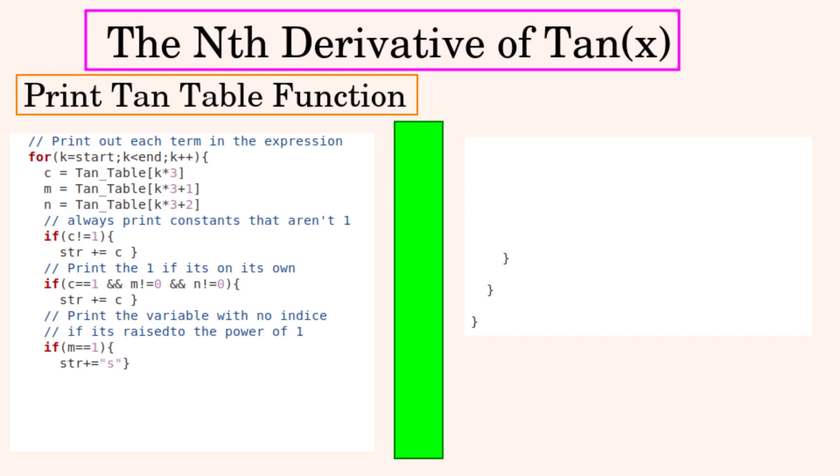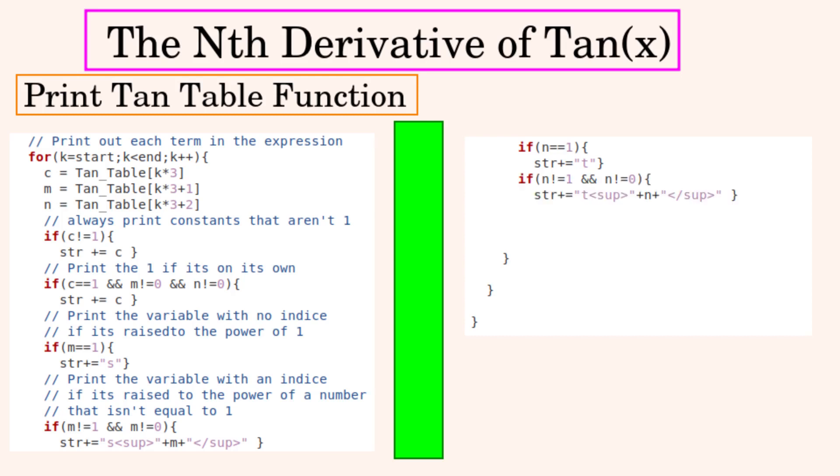If the variable s is raised to the power of one then we'll write it out on its own without any indice. And if s is raised to a number that isn't one or zero then we'll write out the indice being equal to the number it is raised to. We'll do the same thing with the variable t. If it is raised to the power of one then we'll write out the t on its own without any indice. But if it's raised to a number that isn't one or zero then we'll write in the indice. Notice that if it is raised to the power of zero then we won't write it out. We only not need to include any code to do anything if it's raised to the power of zero.